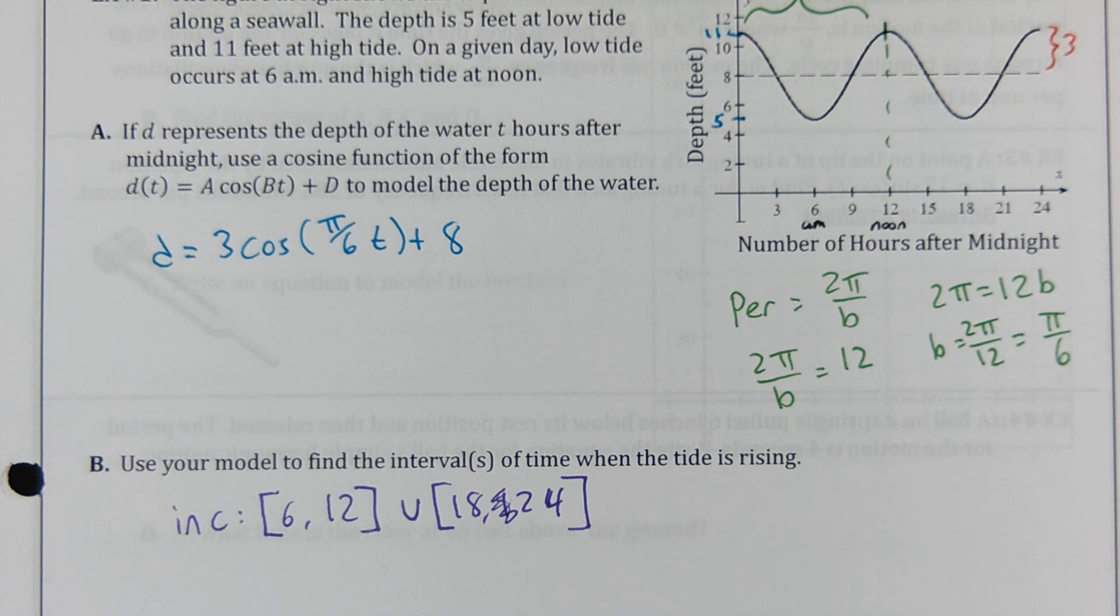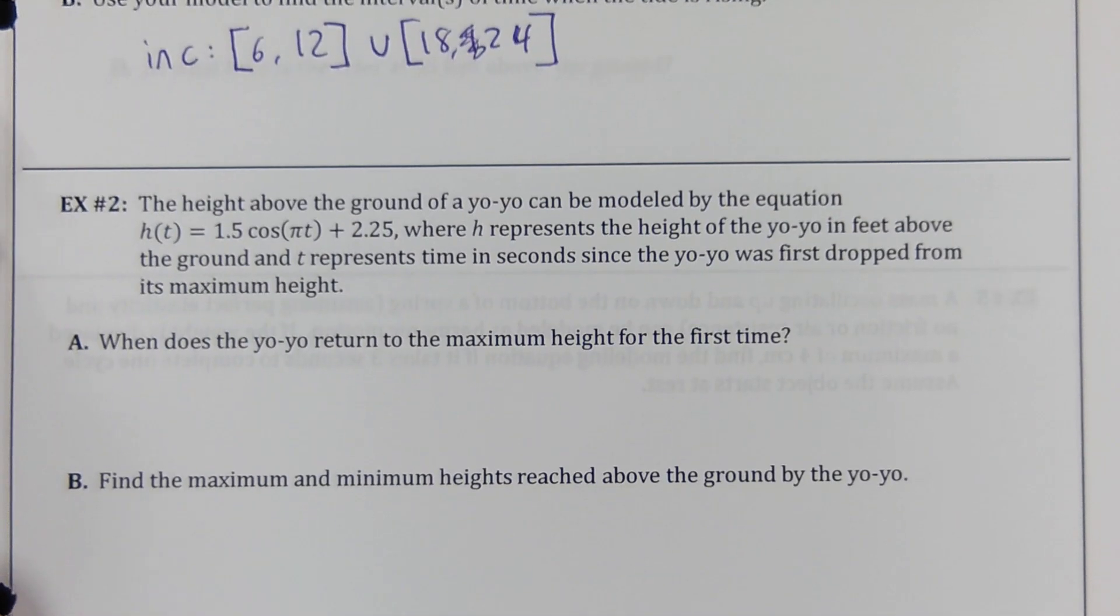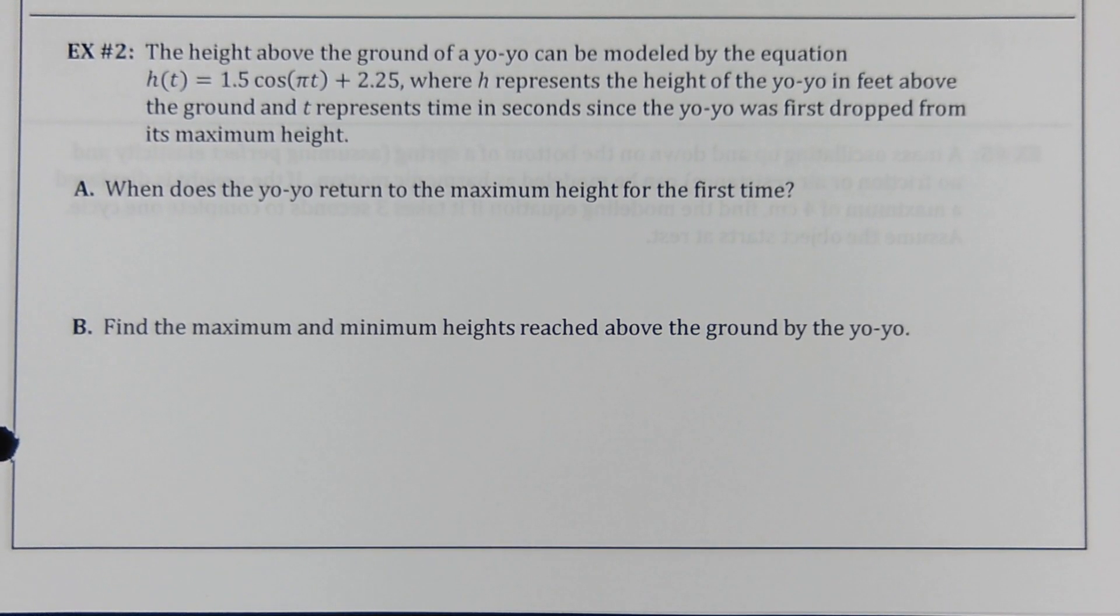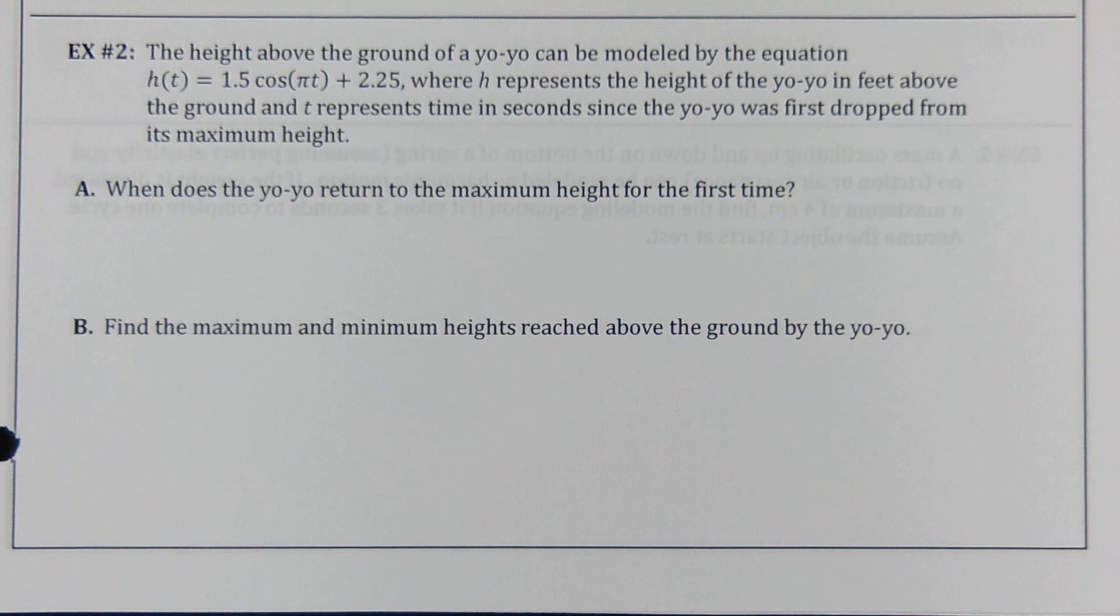This is easy. We've done a lot of hard work to make these word problems easy. Questions, comments, concerns about the tide thing here? No? Not too bad? Okay. For this question, we're going to have to suspend reality a little bit. It says the height above the ground of a yo-yo can be modeled by this equation, where H represents the height of the yo-yo in feet above the ground, and T represents the time in seconds, since the yo-yo was first dropped from a maximum height.